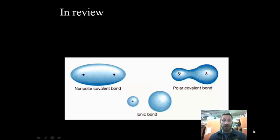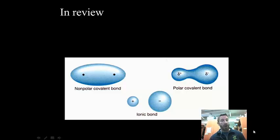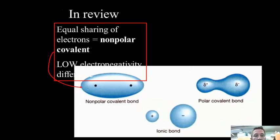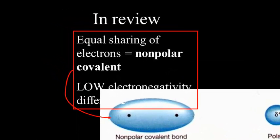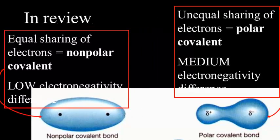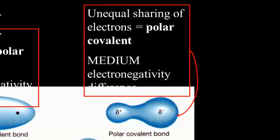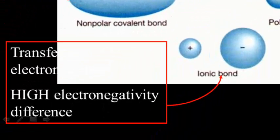Quick review. We put molecules into two categories: first, ionic or covalent, and then we split covalent into polar and non-polar. Non-polar is when you have equal sharing and there's a low electronegativity difference. Polar covalent is when you have unequal sharing and there's a medium electronegativity difference. Ionic is when you actually transfer one electron to another and there's a high electronegativity difference.